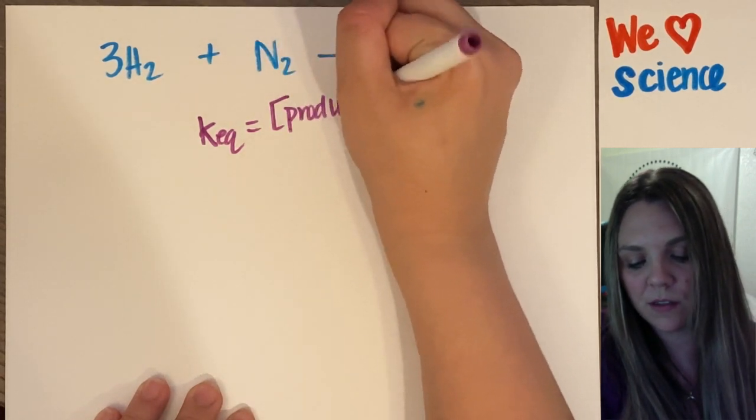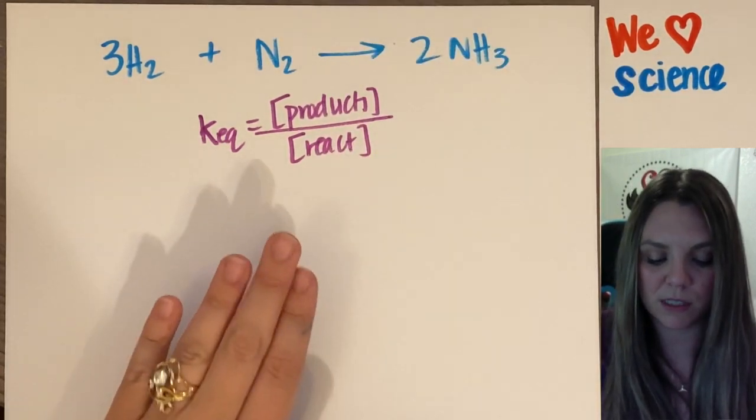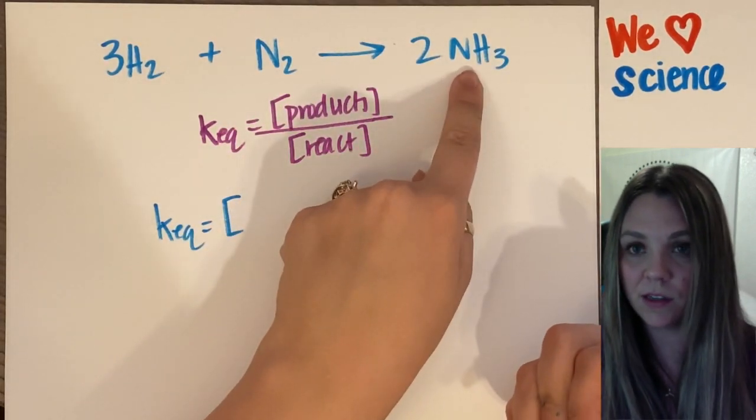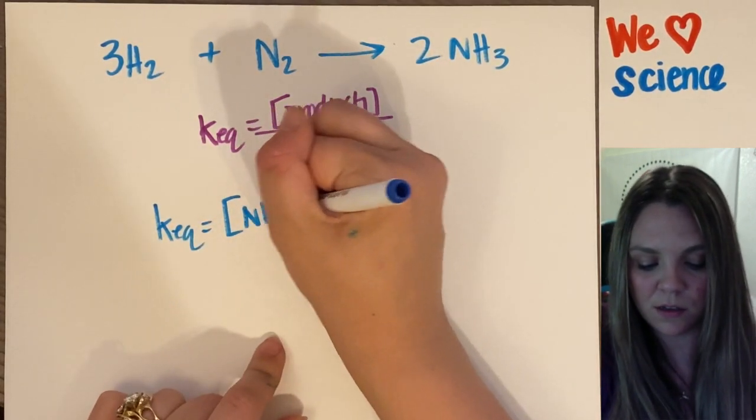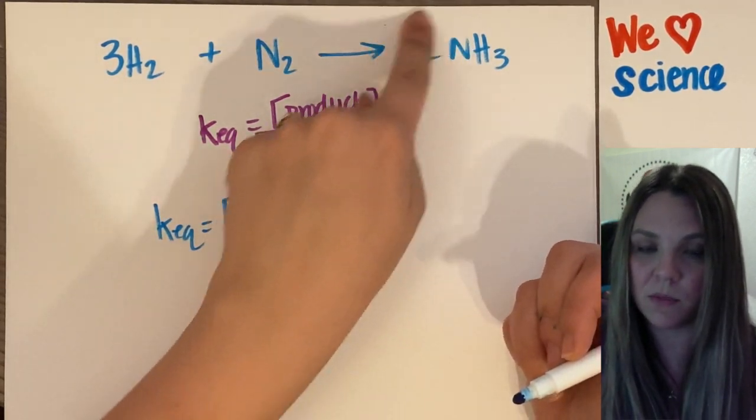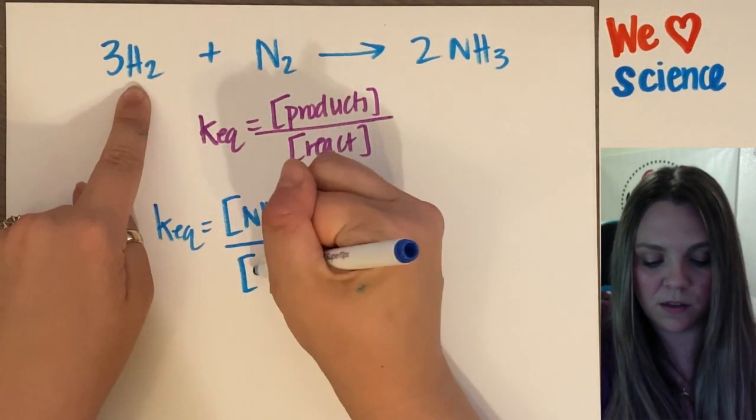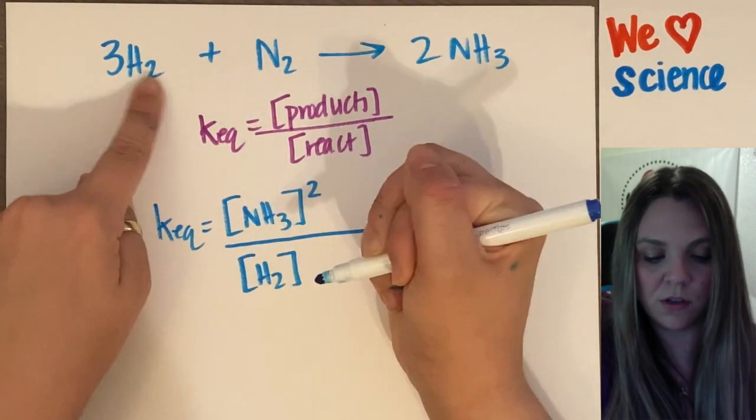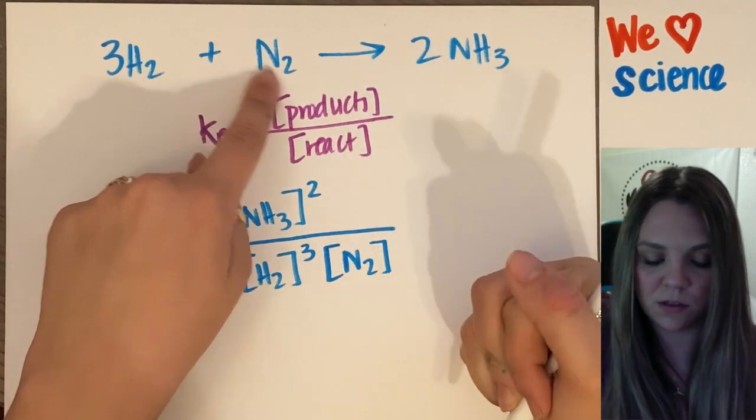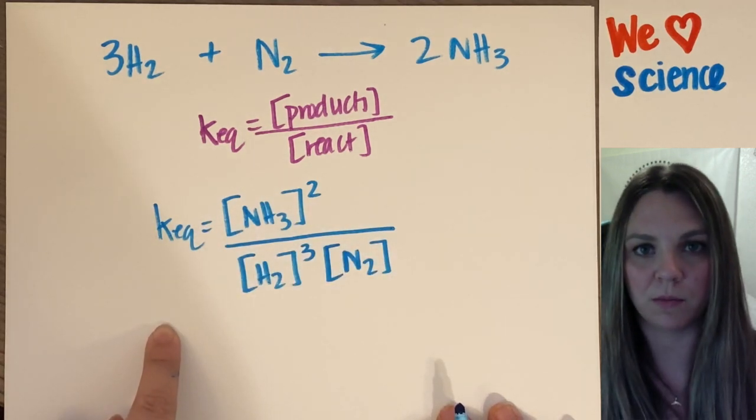Concentration of products over reactants. So what this means is I'm going to have the concentration of my product of NH3 raised to the second power, because that's the coefficient, so squared, divided by my reactants. Concentration of H2 raised to the third power times the concentration of N2 raised to the one power. This is how you would set up your K of equilibrium.